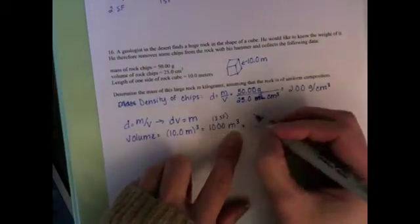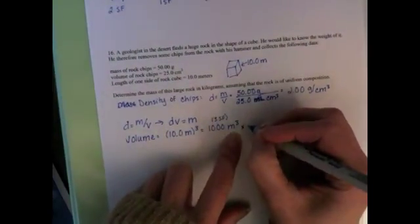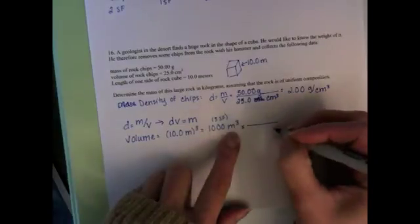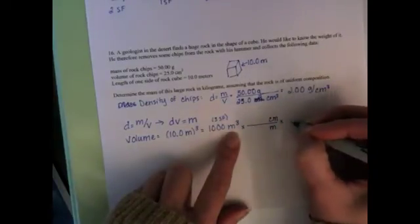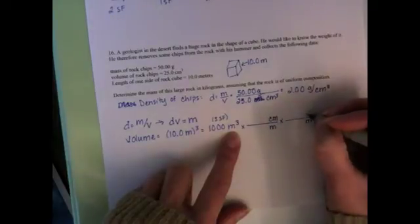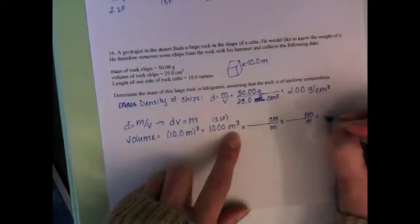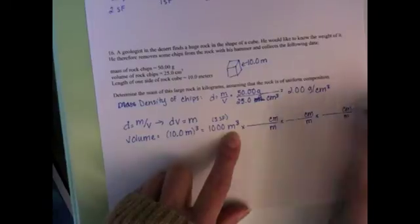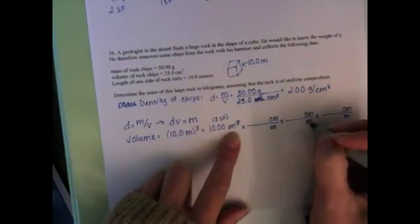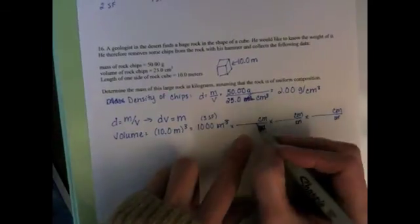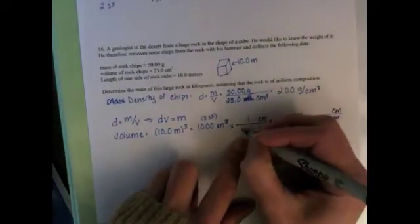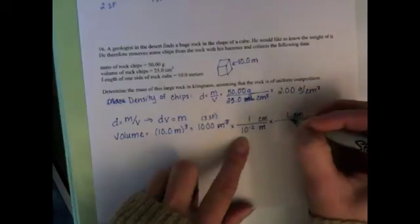But you could have gone with either one and you'll end up with the same answer. Here we want to cancel out units of meters and convert into units of centimeters and we want to do it three times because it's cubed. Cubic meters cancels out with three meters on the bottom. And knowing our understanding of the metric prefixes, 1 centimeter is 10 to the negative 2 meters.